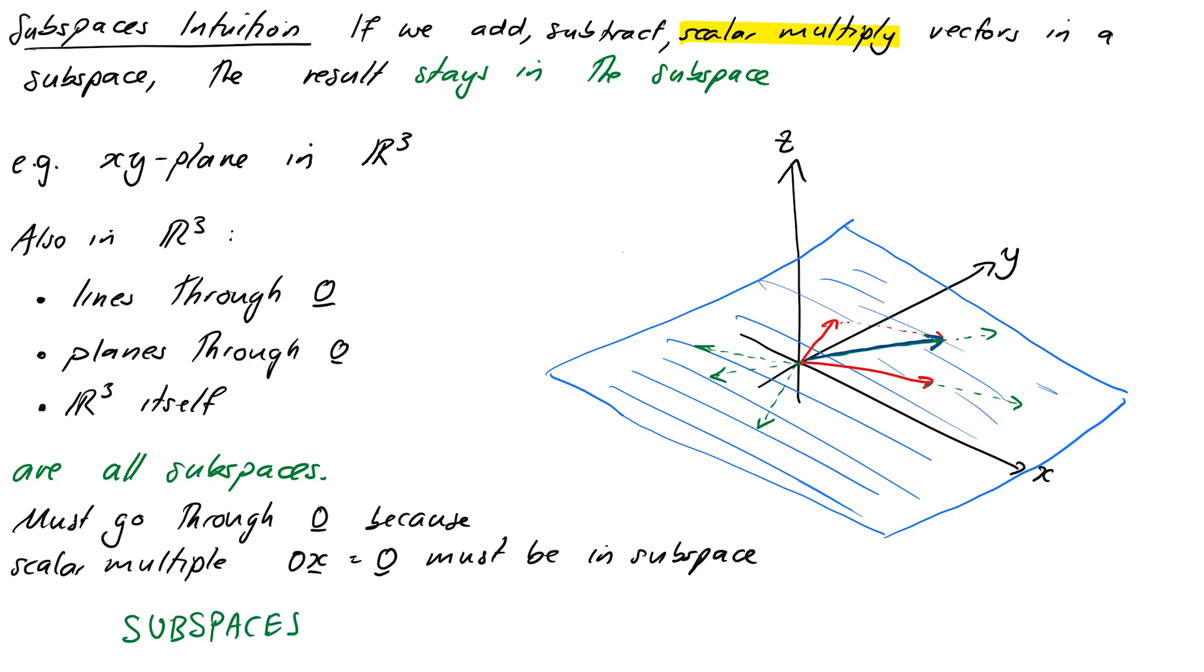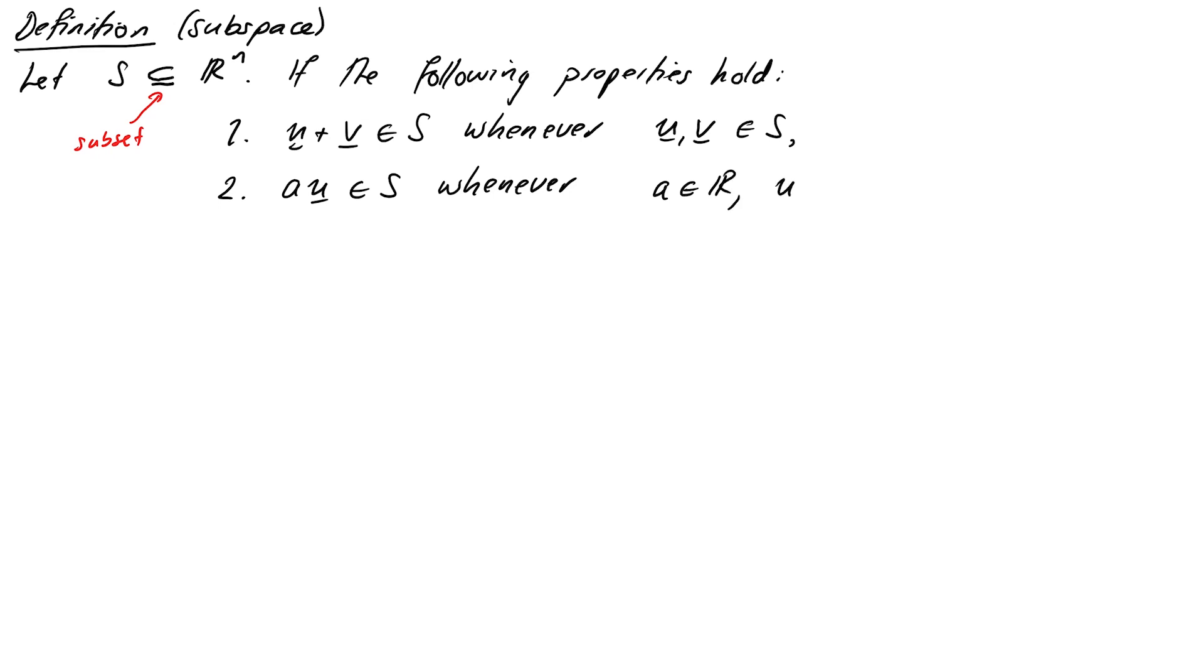So the right intuition for a subspace is, think of it as like a flat thing, or a flat or a straight thing that goes through the origin inside your space. So in R3, the flat and straight things are planes, lines, and I guess R3 itself. But we're now going to get a bit more mathematically precise about this. So let's state the definition of a subspace. Let S be a set that's contained within Rn. If the following two properties hold: first, U plus V is in the subspace S whenever U and V themselves are in S, and second, A times U is in S whenever A as a scalar and U is itself in S, then we call S a subspace of Rn.